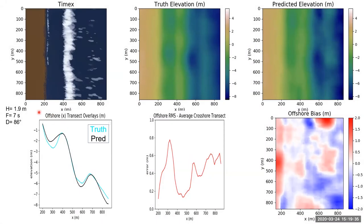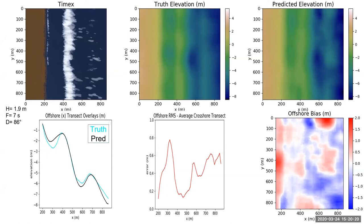In this example, we see the exact same bathymetry, but this time the wave height is 1.9 meters, the period 7 seconds, and the direction 86 degrees. The surf zone is much larger, with the larger wave height creating more breaking in the deeper areas seaward of the sandbar. The apparent sandbar is becoming more apparent to human vision, and the algorithm sees it as well, predicting the more seaward sandbar with greater accuracy. However, with more wave energy being dissipated offshore and over the sandbar, we see fewer waves breaking on the shoreline, causing less accuracy in the trough region shoreward of the sandbar relative to the last example.